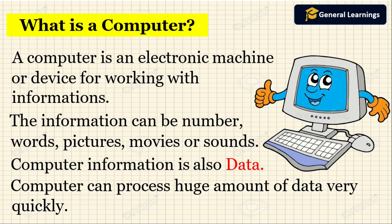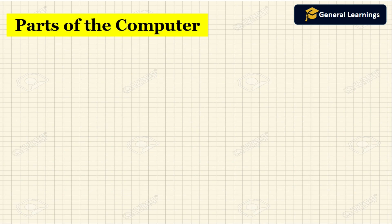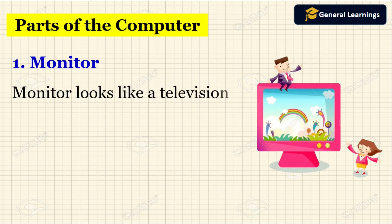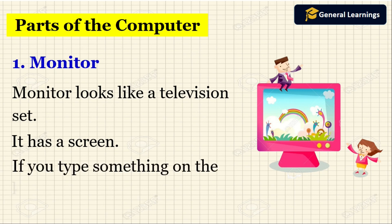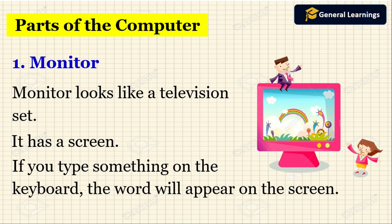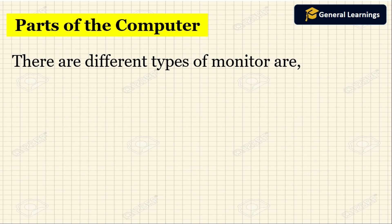Now we will see the parts of your computer. The first one is the monitor. A monitor looks like a television set — it also has a screen. If you type something on the keyboard, the words will appear on the screen, so all typed words will be visible on the monitor.